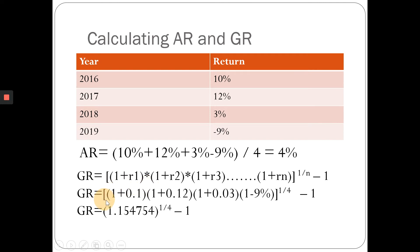Let's work through the calculation. The first expression, (1 + 0.10), means if your investment was $1, after year one you get $1.10. Multiplying by the second year factor (1 + 0.12) gives $1.232 after two years. Applying the third year factor (1 + 0.03) gives $1.26896 after three years.